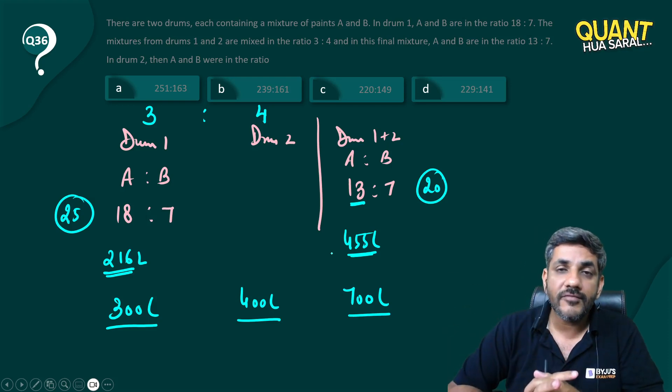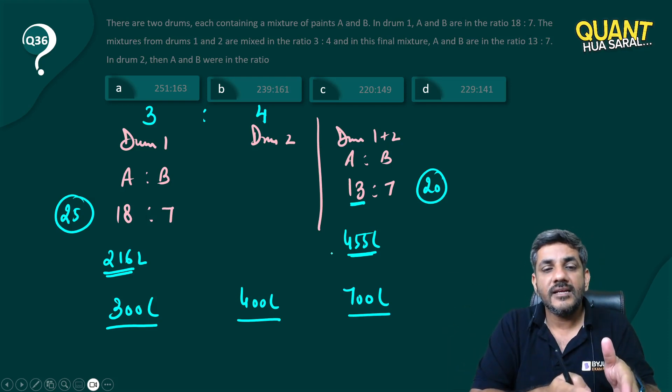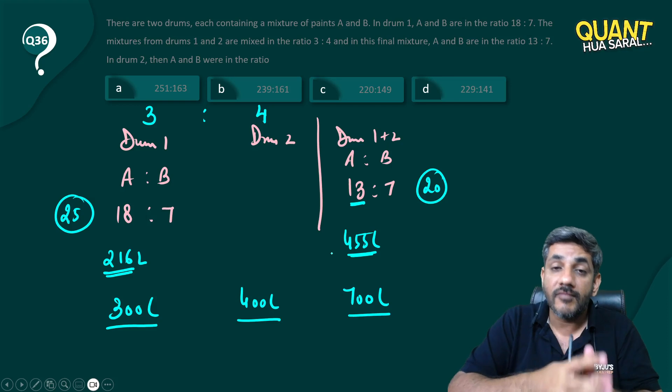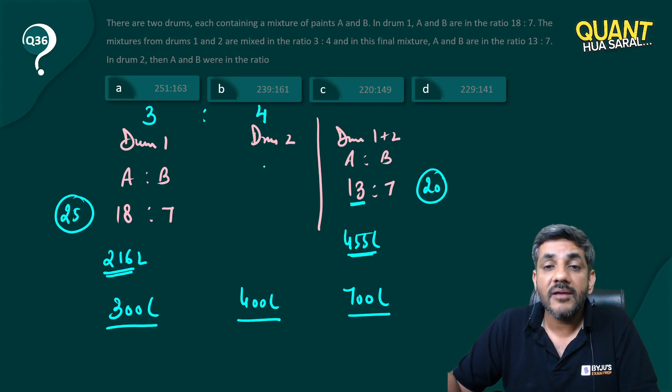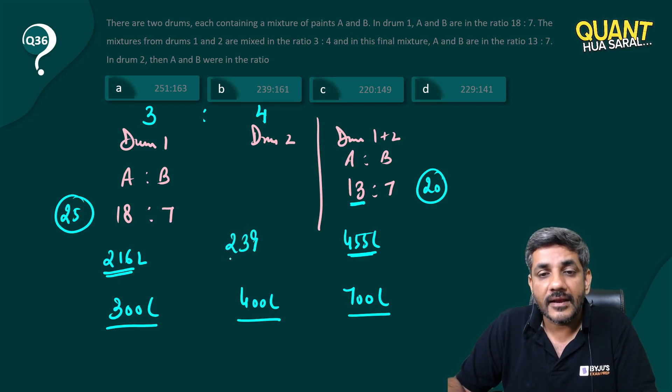So 455 liters is the final quantity of A. 216 is the quantity of A from drum 1. So how much quantity came from drum 2? It is 455 minus 216.